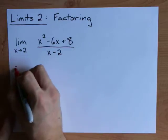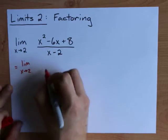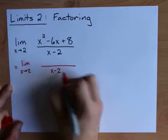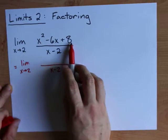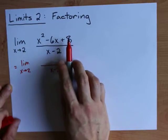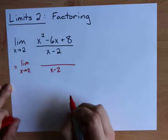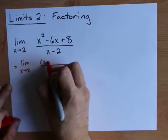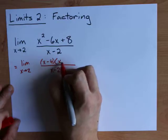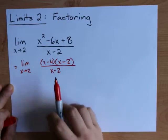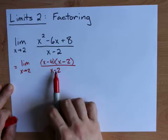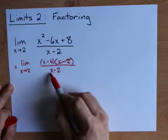This will equal the limit as x approaches 2 of... I will keep my x minus 2 on bottom. When you factor this, you're looking for two numbers that multiply to positive 8 and add to negative 6. That's negative 4 and negative 2. And you'll notice that an x minus 2 factor cancels from both the top and bottom.